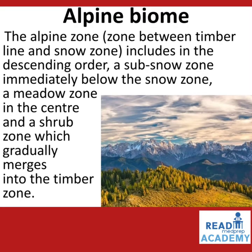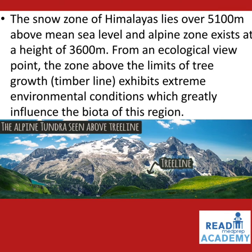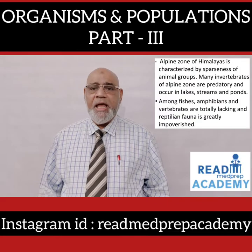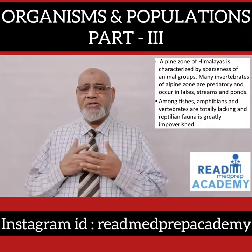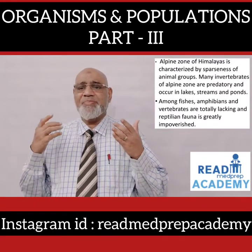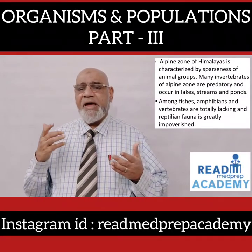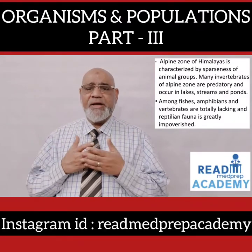The alpine biome is a zone between the timberline and the snow zone. It includes, in descending order, a sub-snow zone immediately below the snow zone, a meadow zone in the center, and a shrub zone which gradually merges into the timber zone. The snow zone of the Himalayas lies about 5,100 meters above mean sea level, and the alpine zone exists at the height of 3,600 meters. The zone above the timberline exhibits extreme environmental conditions which greatly influence the biota of the region. Alpine zone of the Himalayas is characterized by sparseness of animal groups. Many invertebrates of the alpine zone are predatory and occur in lakes, streams, and ponds. Among vertebrates, amphibians are totally lacking, and riparian fauna is greatly impoverished.